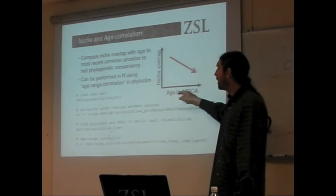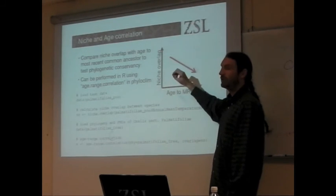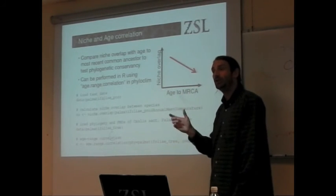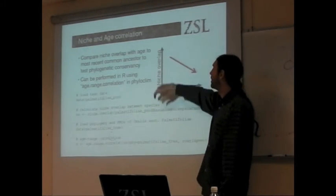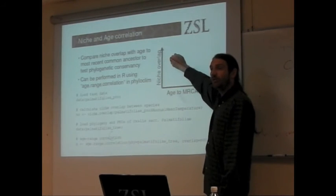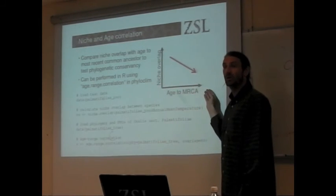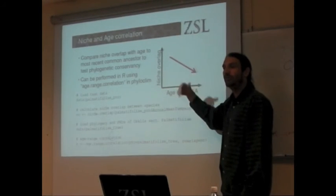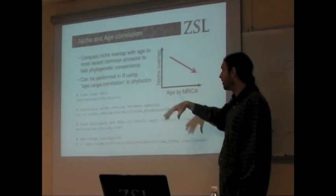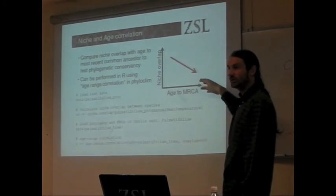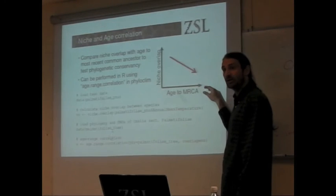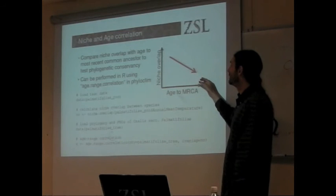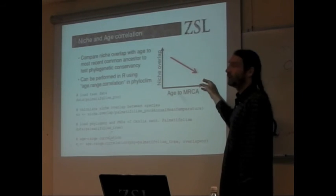So, a nice analysis that we can do is basically a scatter plot that says for each pair of species in our phylogeny, we can plot on one axis the niche overlap, and on another axis the age to the most recent common ancestor. And if we have a pattern of phylogenetic conservancy across the whole tree, we would expect a sort of correlation that moves in this direction. As we get older, as we get more distantly related, we get lower niche overlap.